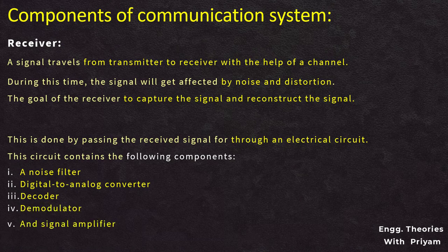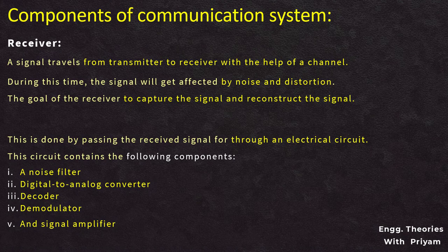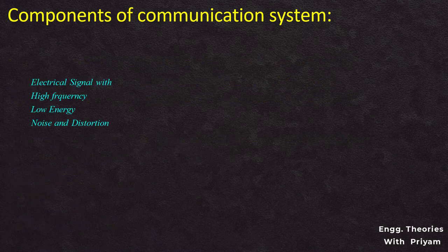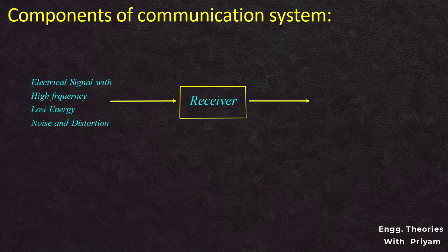The noise filter eliminates noise from the received signal. The digital-to-analog converter converts the received signal into an analog signal. The decoder decodes the received signal, and the demodulator translates the high frequency signal to a low frequency signal. The signal amplifier amplifies the signal to increase its strength. If the communication is done through an unguided medium, there will be antennas on both sides of the channel. The input signal to the receiver is a high frequency, low energy, distorted electrical signal, and the output signal is a low frequency, high energy, distortion-free electrical signal.